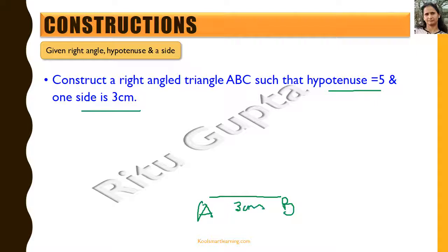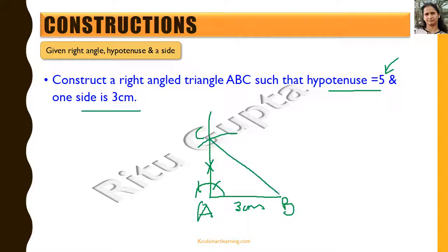We draw a right angle at point A using construction — knowing 60 and 120, their bisector gives 90 degrees. At point B, the hypotenuse is 5 cm, so we open the compass to 5 cm and with B as center draw an arc cutting the 90-degree line at point C. Thus BC equals 5 cm and angle A equals 90 degrees — this is the required right-angled triangle.